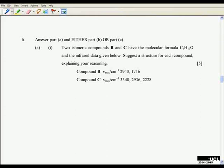Question 6 is based on the infrared material that you've been studying for yourself and on the aromatic chemistry. Six a, part one: two isomeric compounds B and C have the molecular formula C6H10O and the infrared data given below. Suggest a structure for each compound, explaining your reasoning.